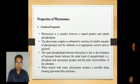Let us now discuss the properties of phytosomes. Chemical properties: Phytosome is a complex between a natural product and natural phospholipids. The phytosome complex is obtained by reacting suitable amounts of phospholipid and the substrate in an appropriate solvent such as glycerol. The main phospholipid-substrate interaction is due to the formation of hydrogen bonds between the polar head of phospholipids and the polar functionalities of the substrate. When treated with water, phytosomes assume a micellar shape, forming liposomal-like structure.